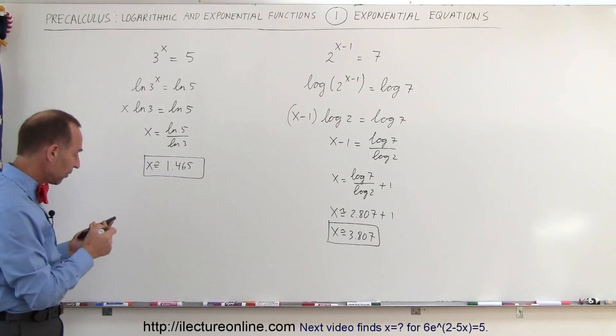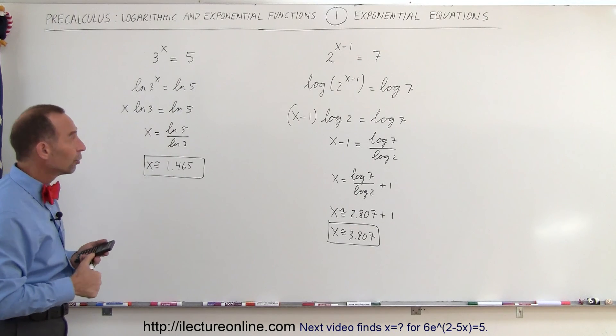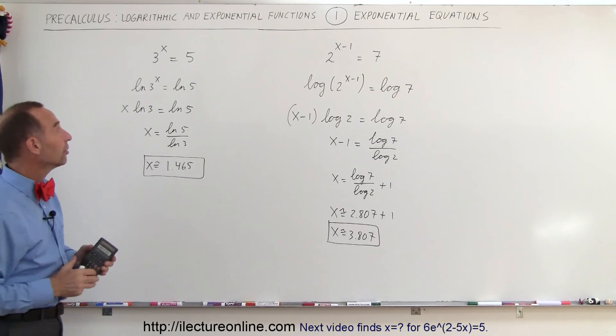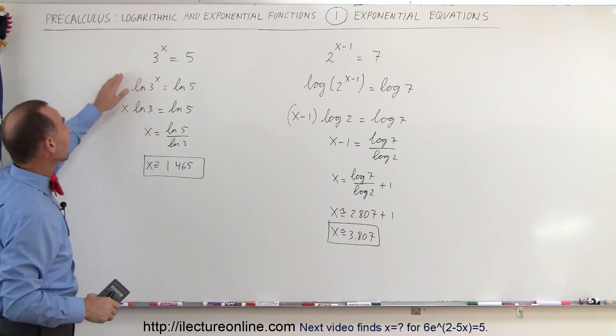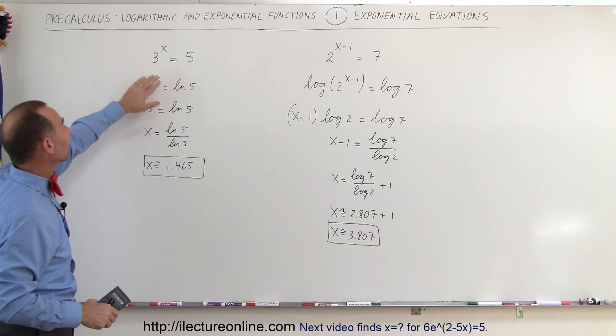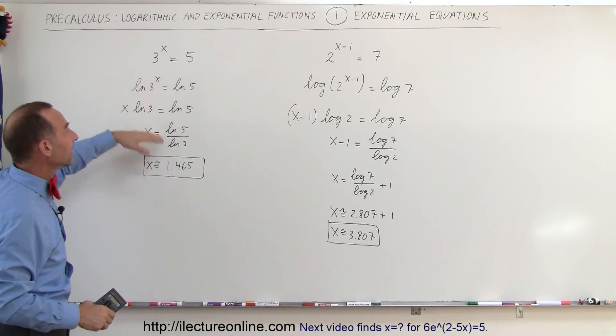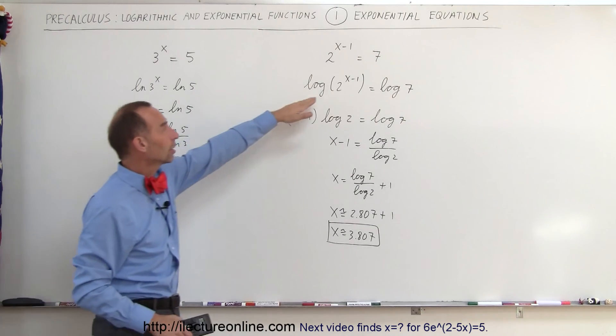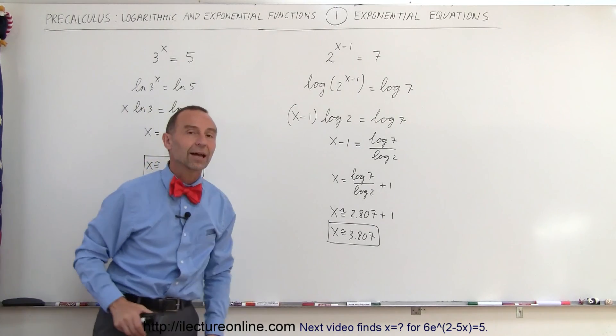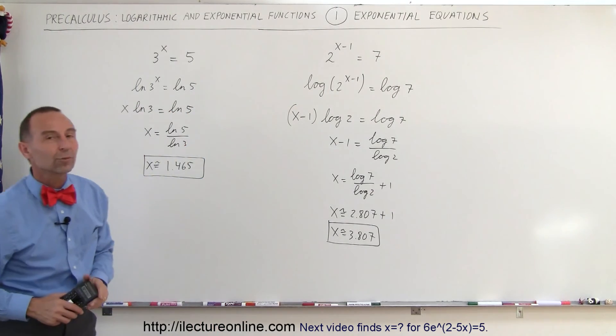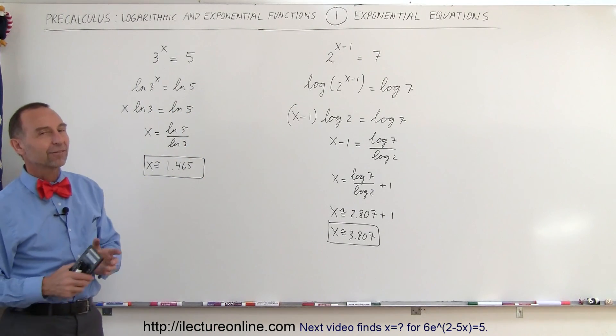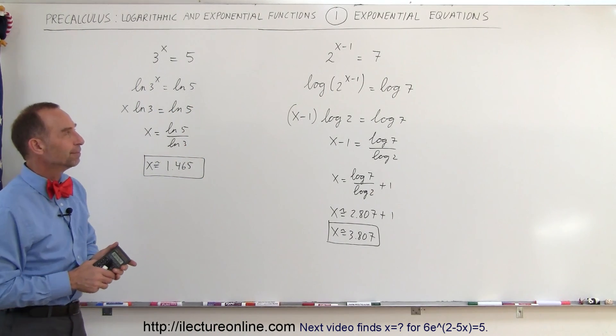That's how we use the concept of exponential and logarithmic functions together — we can go from one to the other. If we take the log of both sides, we can isolate x, or isolate x minus 1, and that's how that's done.